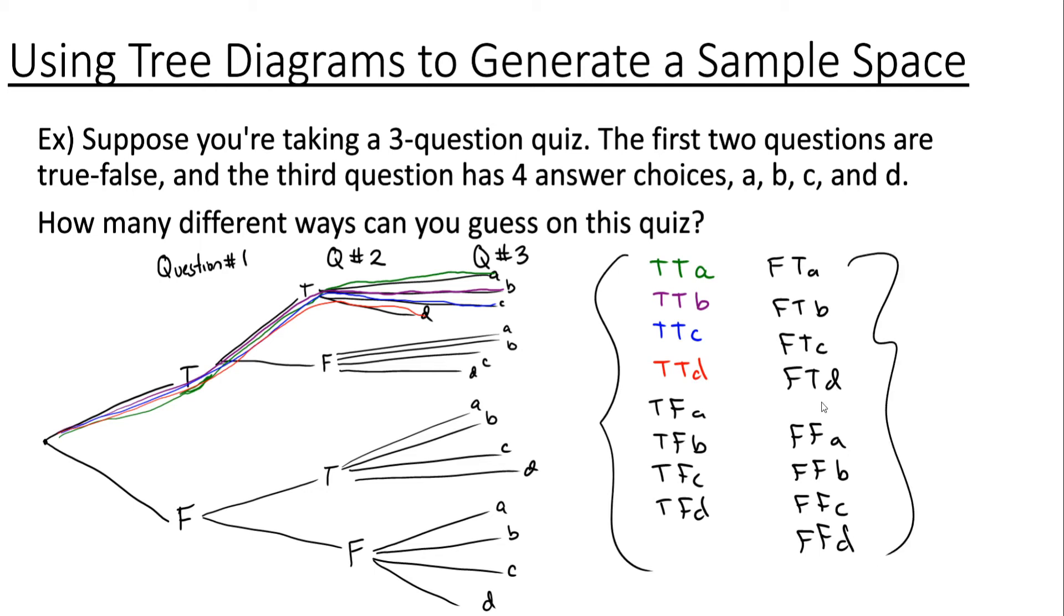If we count everything up in here we see that we have 16 ways of guessing or 16 equally likely ways of guessing.